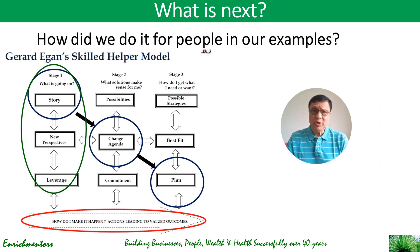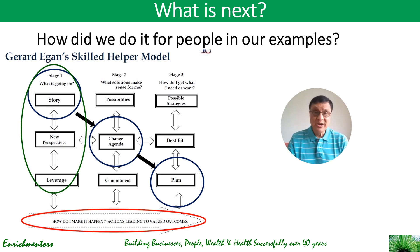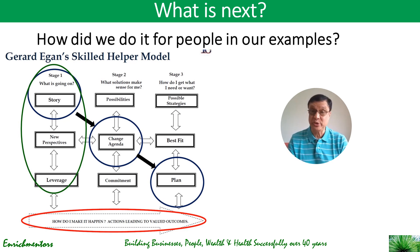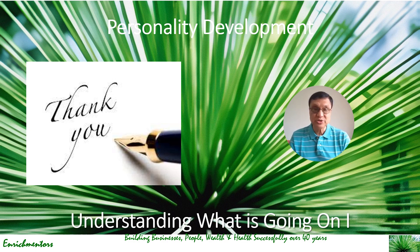Having looked at Stage 1 — what's going on — we move on to Stage 2 in the next lecture, where we will look at what solutions make sense. But before that, in the next lecture, we will show you examples and share how we actually did this process for the people in our examples — the two examples we have been running through. Thank you so much for watching this first lecture of this section on understanding what is going on to help you develop your personality. I hope you continue to learn new things and enjoy. I look forward to seeing you in the next lecture. If you have any questions, feel free to message me and I will be happy to answer them.